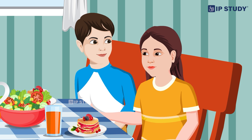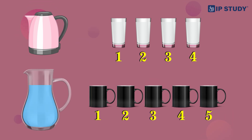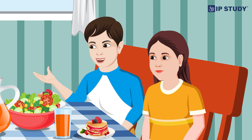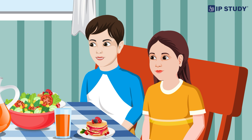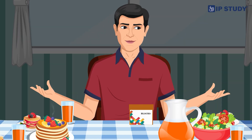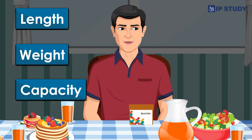And you know one thing about the capacity of an object? What? A kettle can hold four glasses of milk, while a jug can hold five mugs of water. Oh I see, so different containers have different capacities, like how my water bottle can hold more liquid than a regular drinking glass. Right Aman! Now you both know about measurement — length, weight, and capacity.